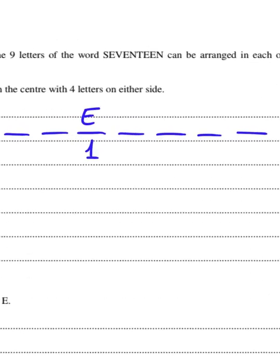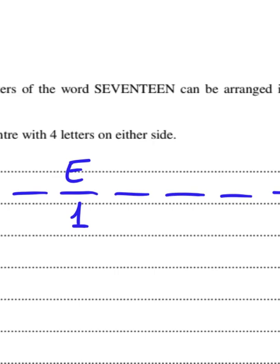So I need to arrange nine letters: one, two, three, four, five, six, seven, eight, nine. One of the E's is in the middle, so this is a fixed position for E. I have one single choice, and four letters are on either side. This means that on the remaining eight positions, I need to arrange the remaining eight letters.